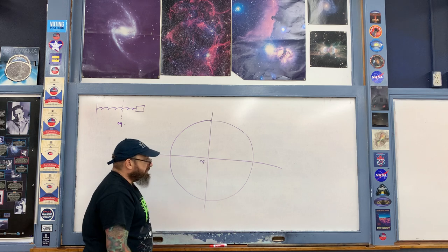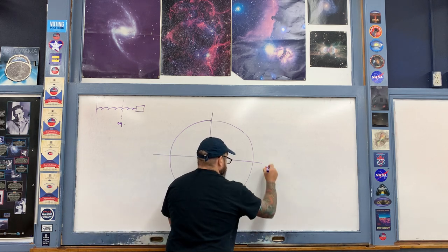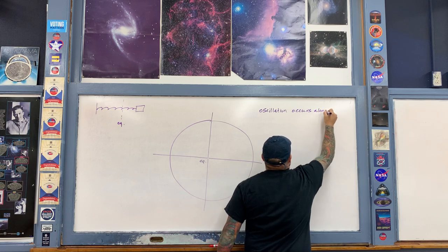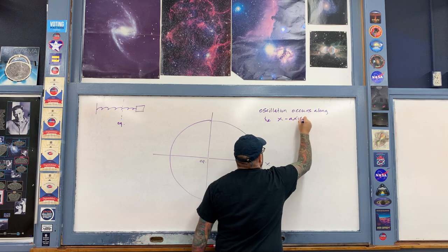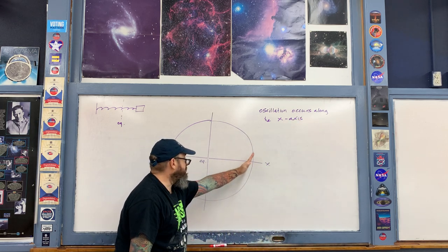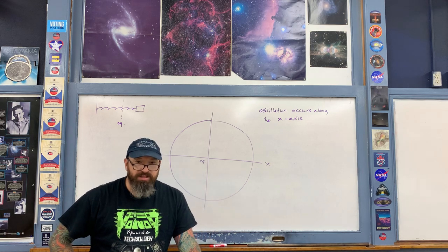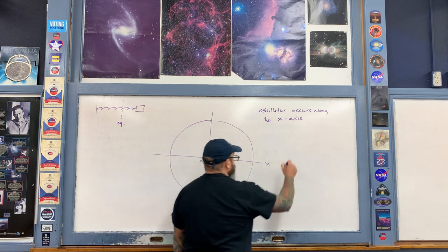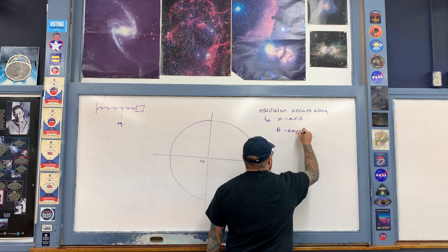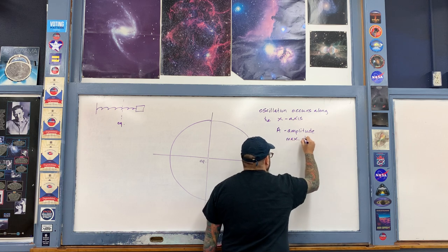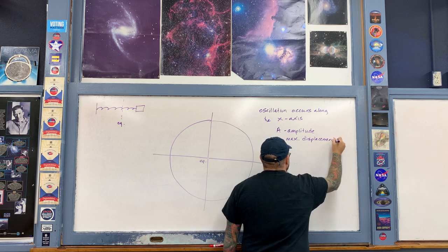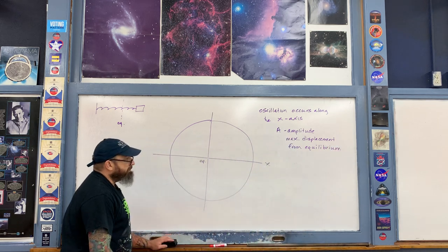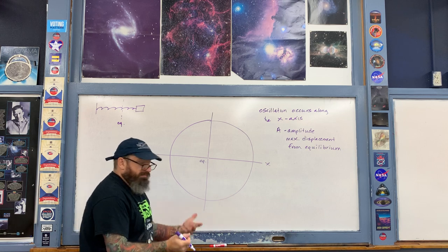The oscillator oscillates along the x-axis about the equilibrium position. The maximum displacement of the oscillator from equilibrium is called the amplitude, capital A, which corresponds to the radius of this circle. So capital A is the amplitude of the oscillation — the maximum displacement from equilibrium.